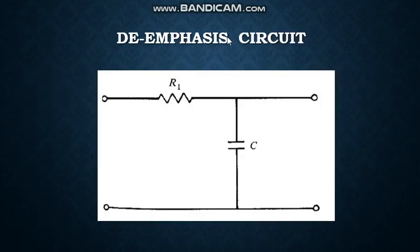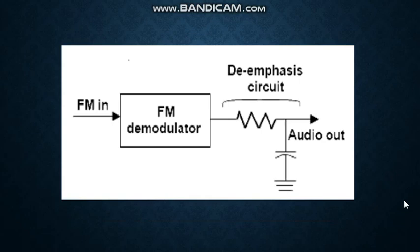This is a de-emphasis circuit. It is also a simple RC circuit. The de-emphasis circuit is nothing but a simple low-pass filter, whereas the pre-emphasis circuit is simply a band-pass filter. The de-emphasis circuit is used after demodulation. We are getting FM signal input, then FM demodulator. Then we are using a de-emphasis circuit after FM demodulation. We use pre-emphasis circuit before FM modulation and de-emphasis circuit after FM demodulation.